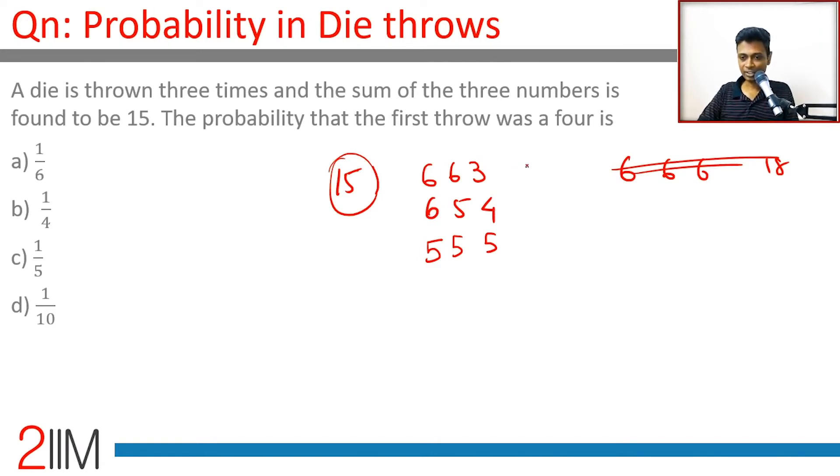Now 6 6 3 can be 6 3 6 or 3 6 6, so there are three possibilities here. There are six possibilities for 6 5 4 and one possibility for 5 5 5. Totally there are 10 possible outcomes where it could turn out to be 15.